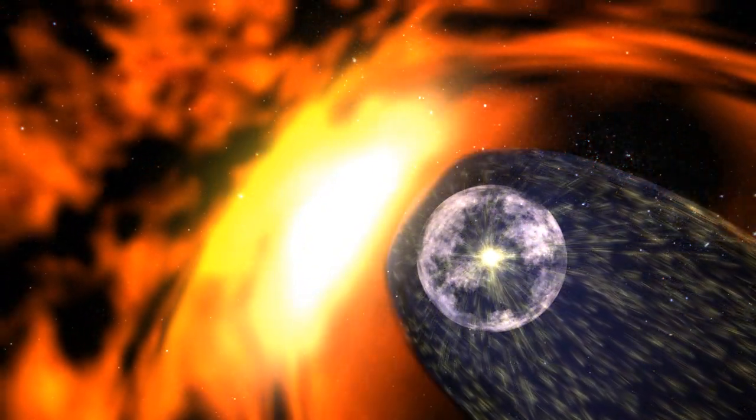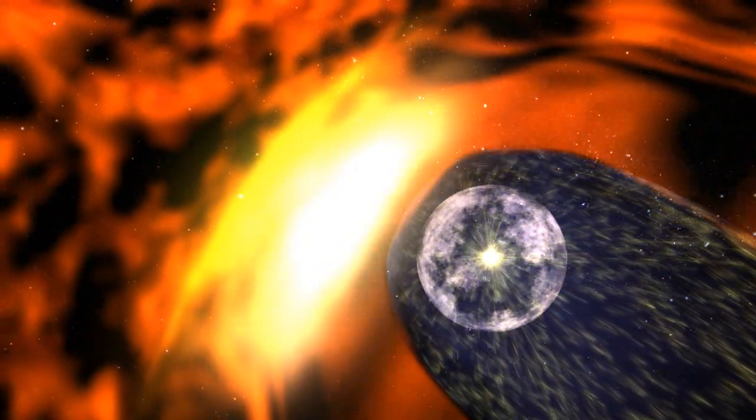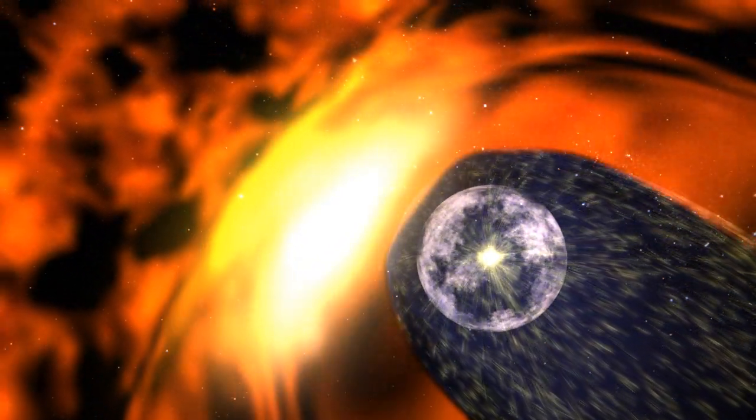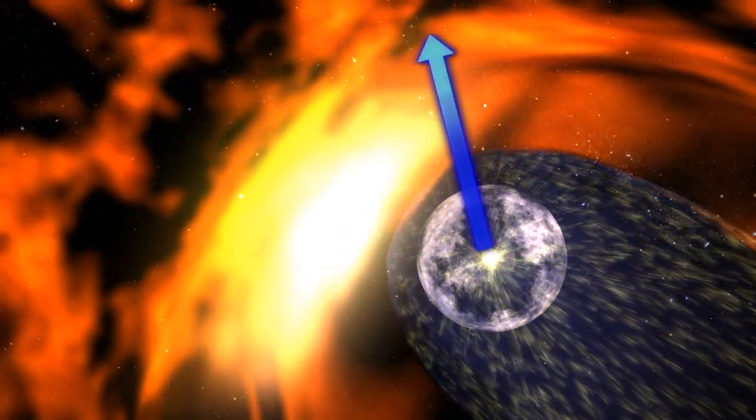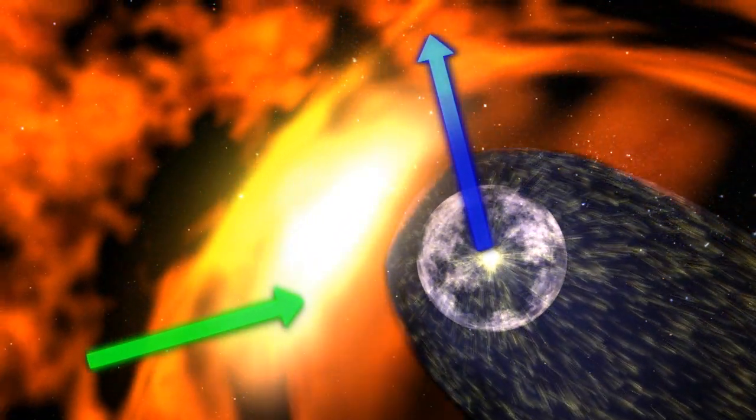Like a bicycle traveling in a crosswind, the wind that the solar system feels is actually a combination of the solar system's movement relative to the galaxy and the movement of the interstellar medium itself.